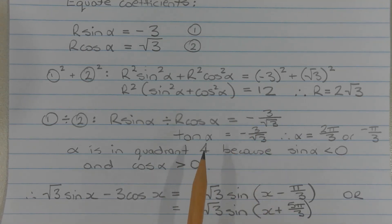Now this is a negative ratio, which means alpha must be in either quadrants 2 or 4. So alpha is equal to 2 pi over 3 or negative pi over 3. Now alpha is in quadrant 4 because sine alpha is negative and cos alpha is positive.